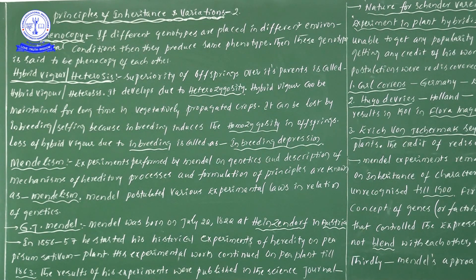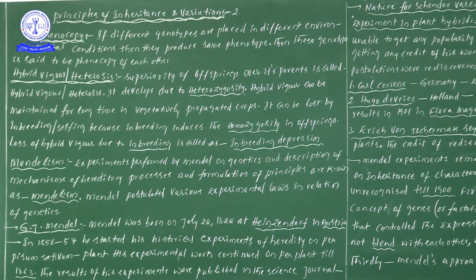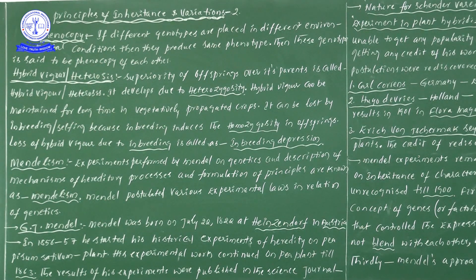Phenocopy means: if plants with different genotypes are placed in different environmental conditions and kept in various conditions, we can find which ones show the same phenotype. The environmental conditions change but the genetic information and genotype remain the same. Thereby we can observe the same type of phenotype, and these genotypes are said to be phenocopies of each other.